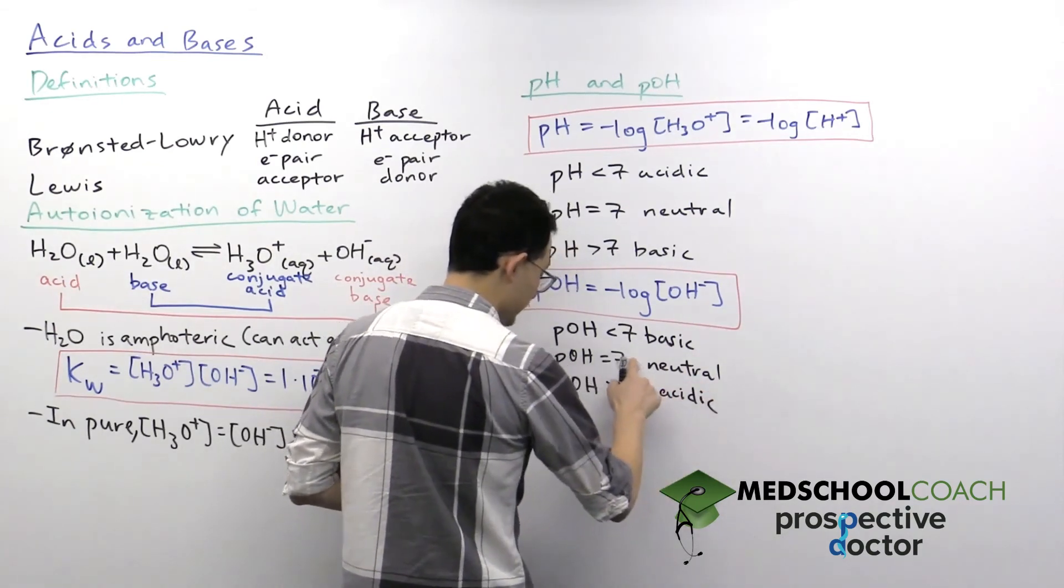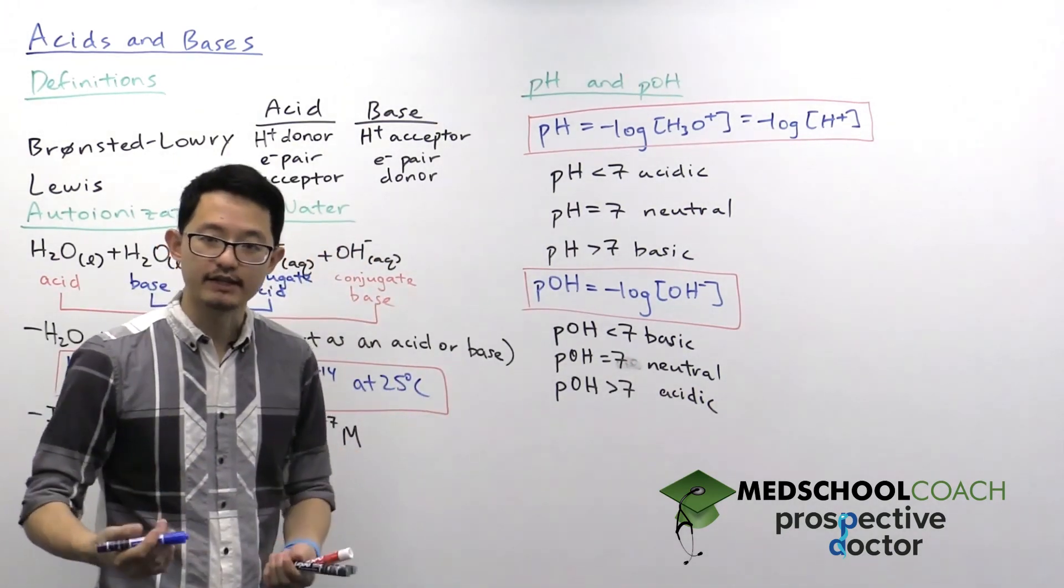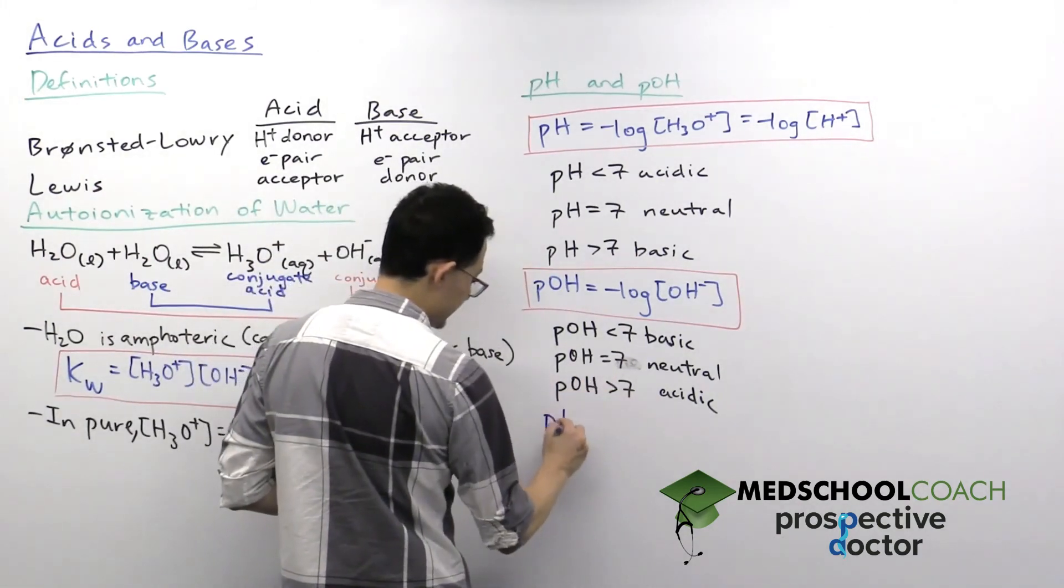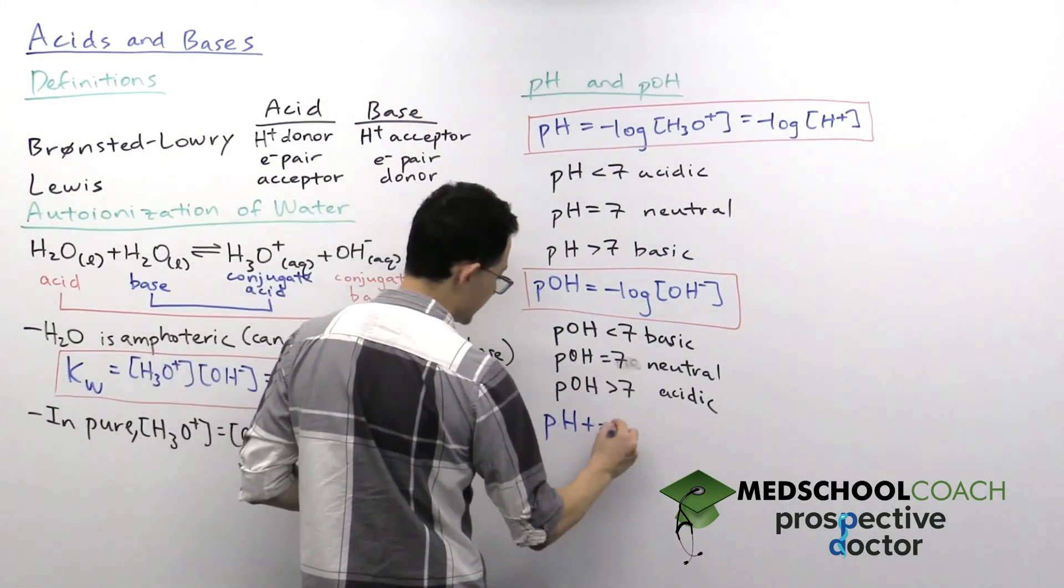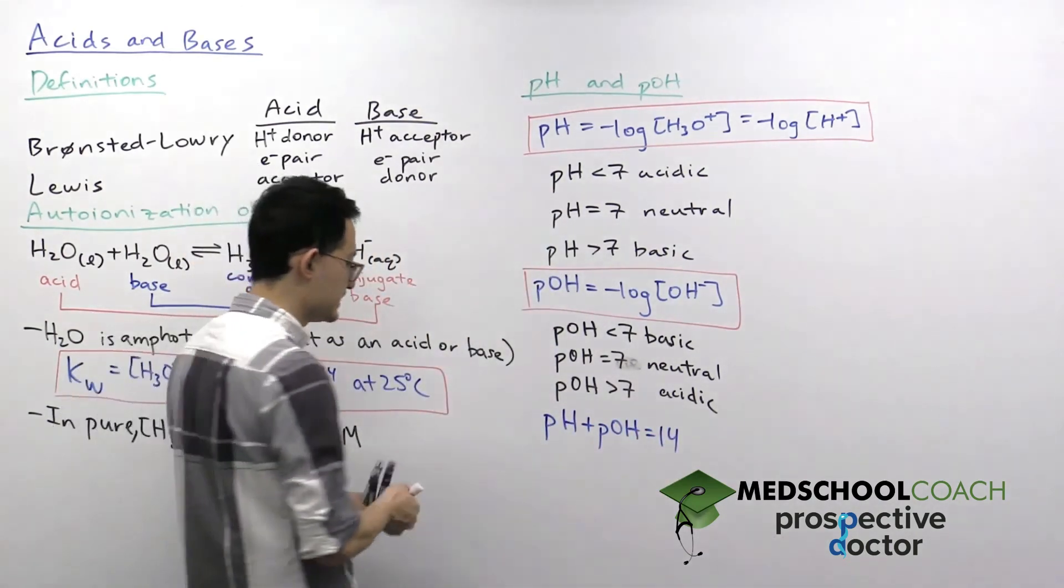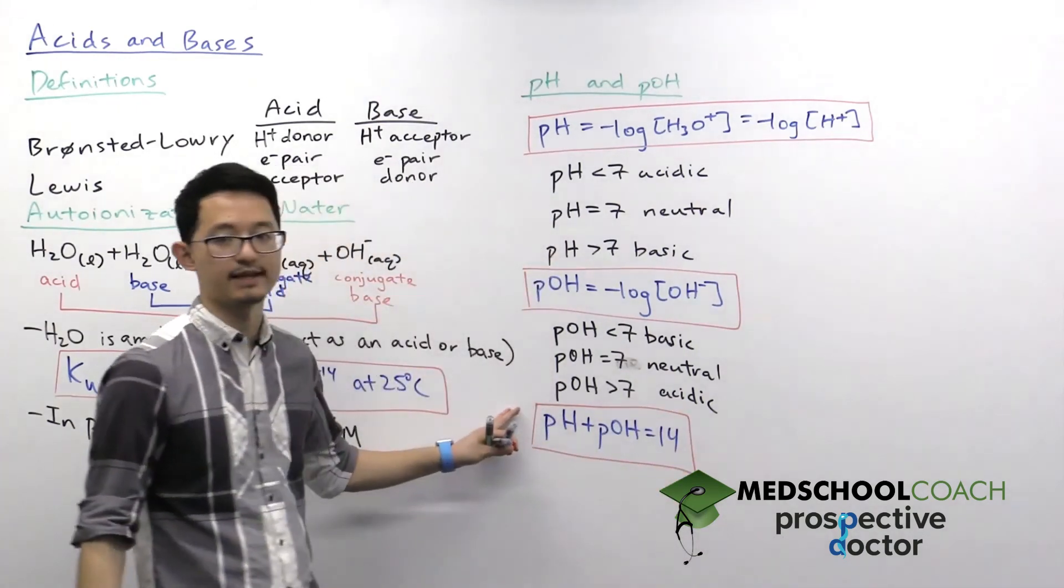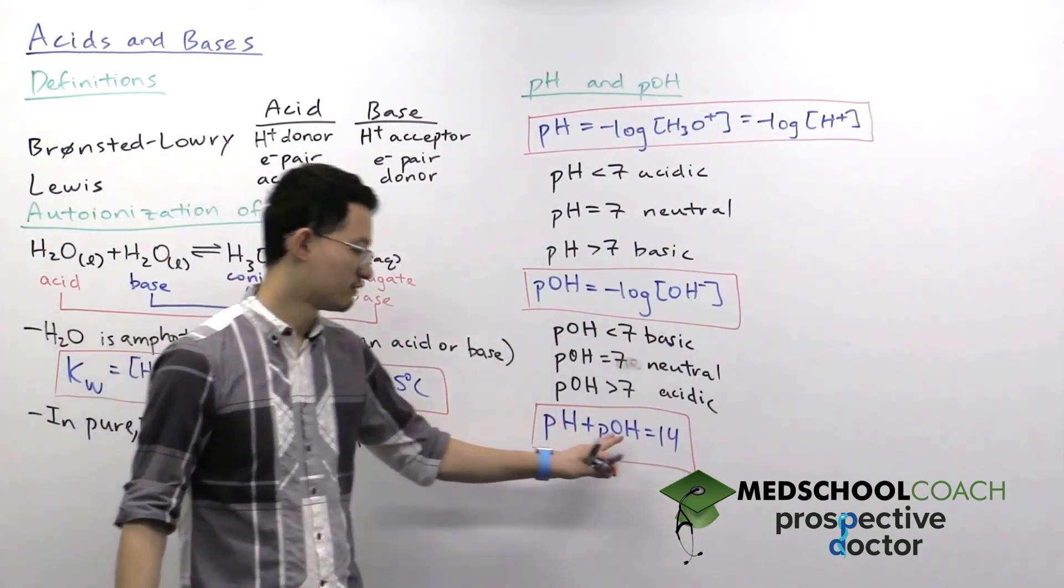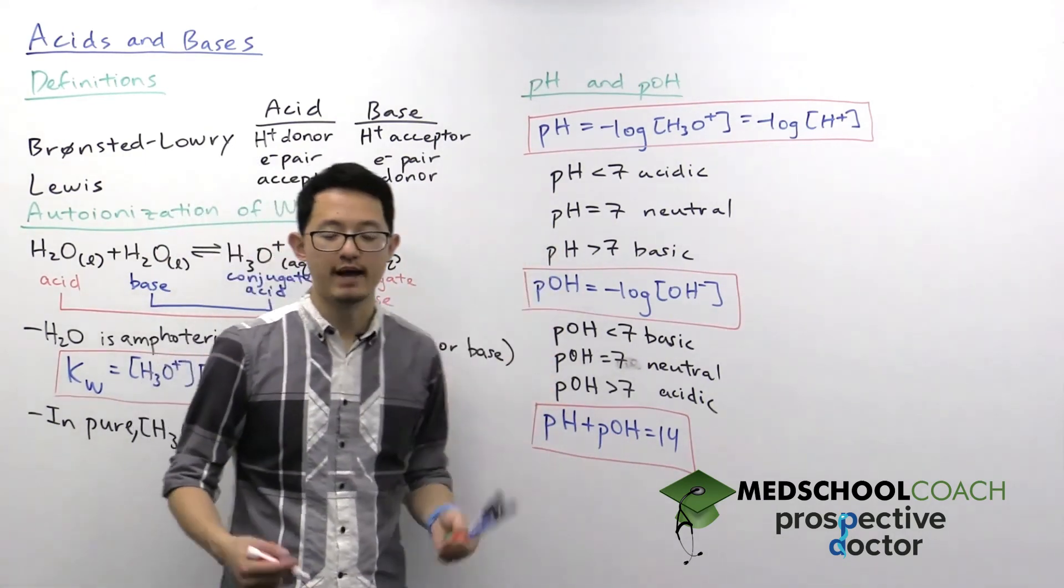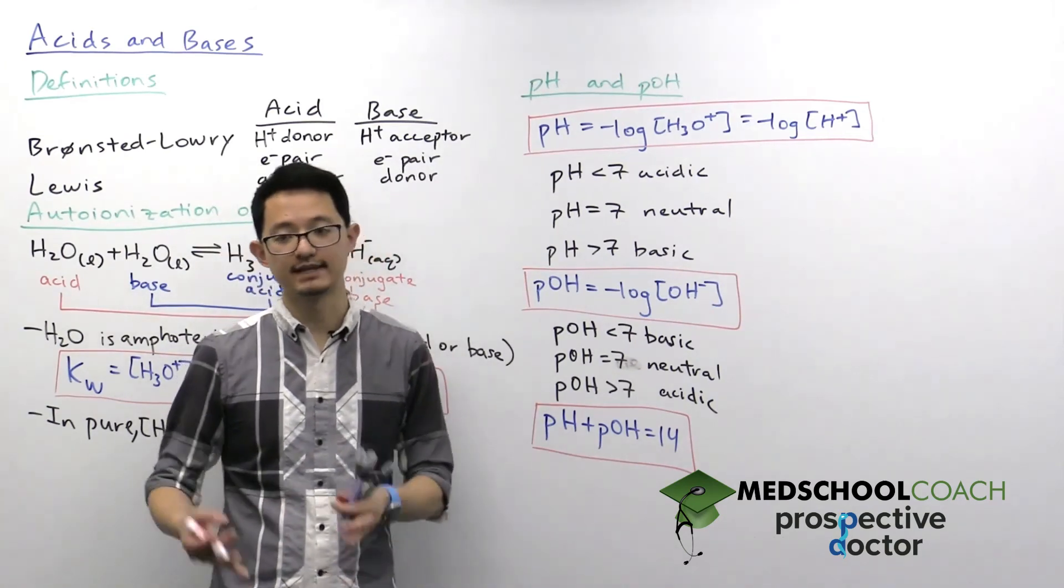And one way we can work out this inverse relationship between the pH and pOH is there's actually another equation that relates the two values together. And that is pH plus pOH is equal to 14. So from this equation, you can see any time you're dealing with a solution with a pH less than 7, its pOH is going to be greater than 7. So that way, the pH and pOH always match up in terms of describing the solution as acidic, basic, or neutral.